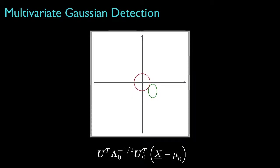And finally, if we rotate the data to decorrelate for hypothesis 1, we'd get something that looks like this. In general, then, we can always perform these operations and transform any multivariate Gaussian hypothesis test into one that looks like a zero-mean identity covariance for hypothesis 0, and some potentially non-zero mean and an uncorrelated covariance for hypothesis 1.